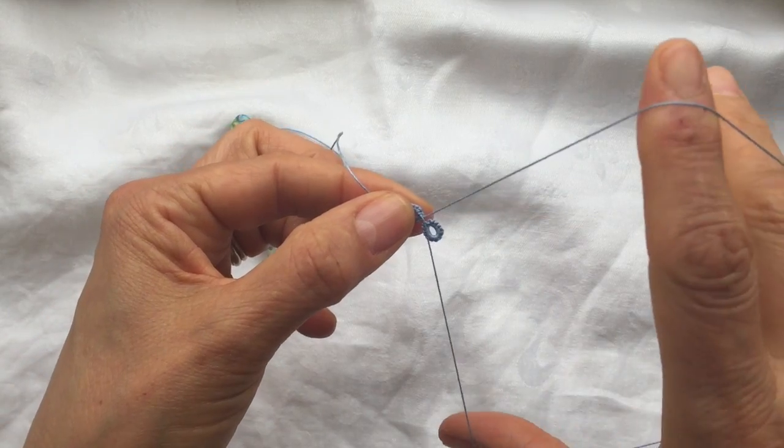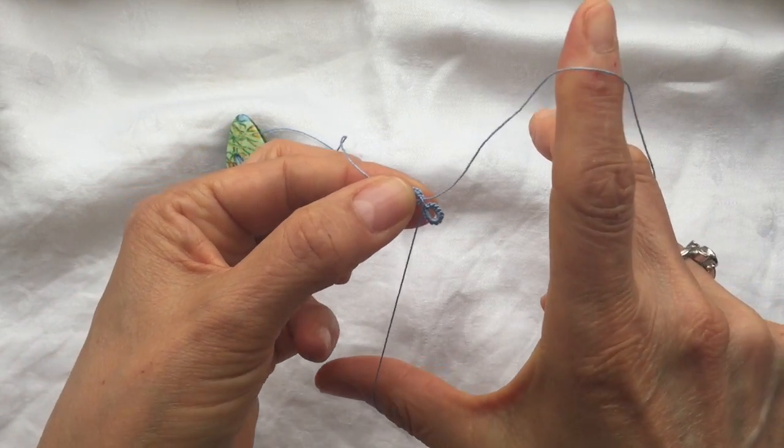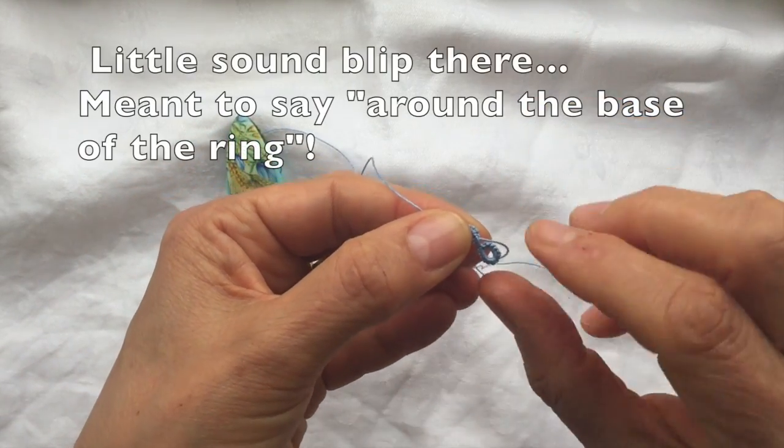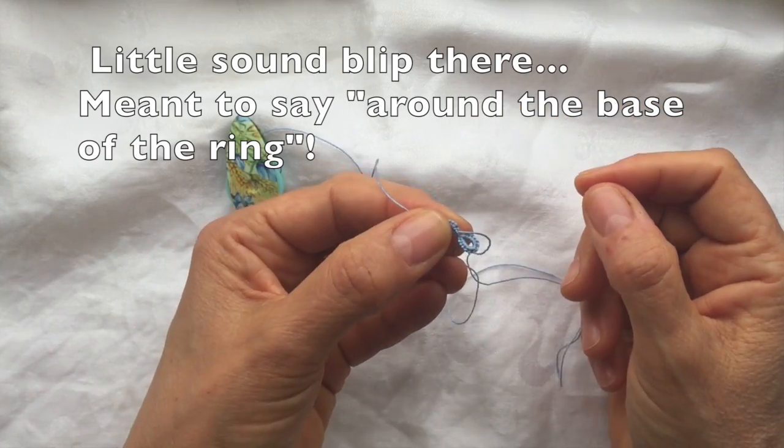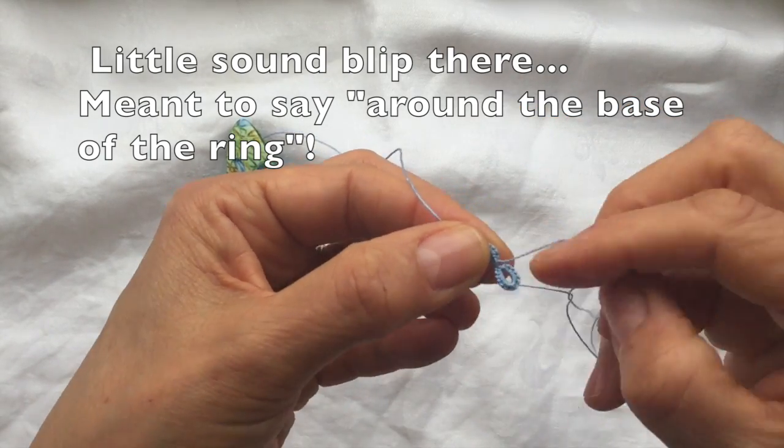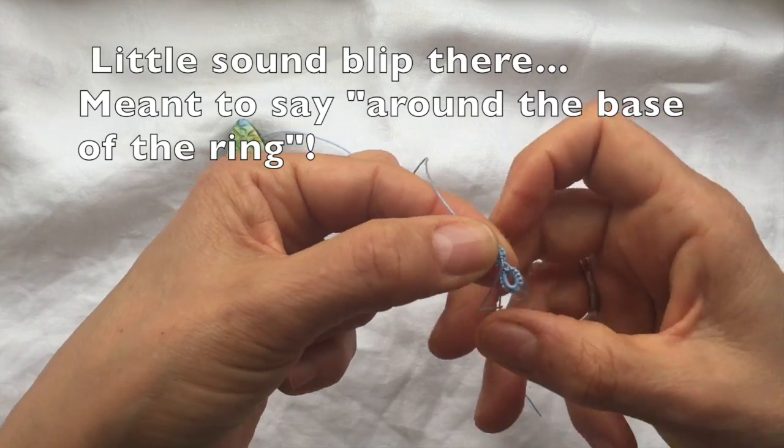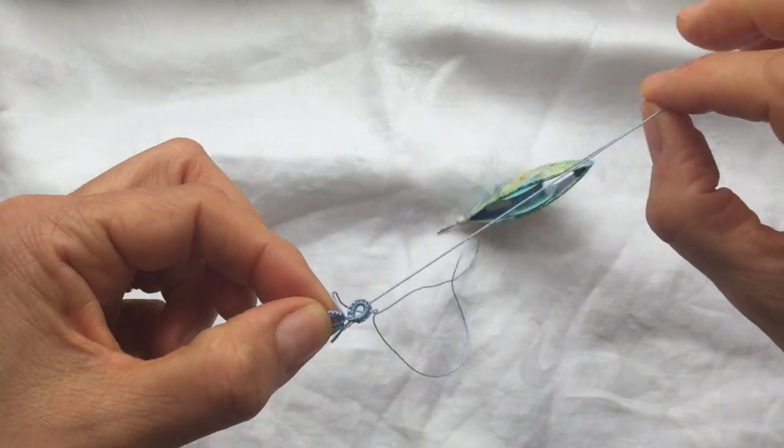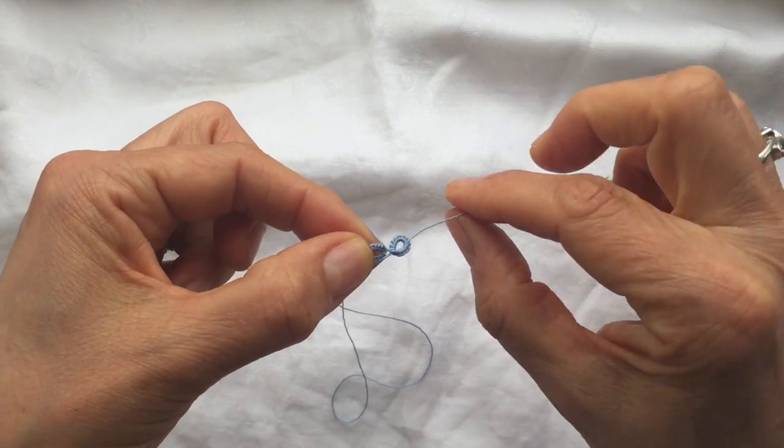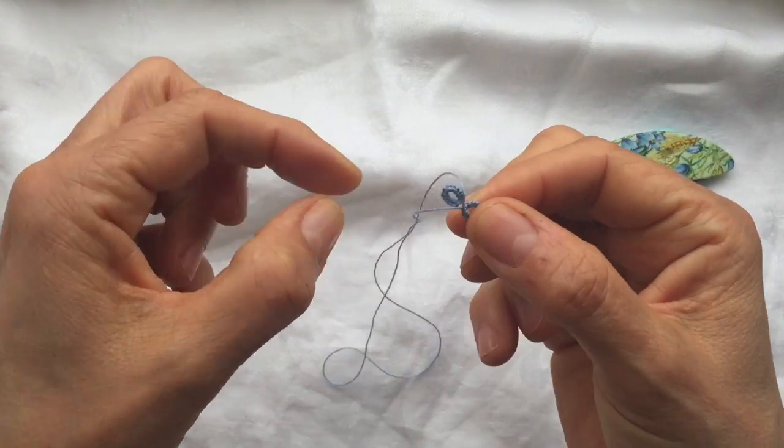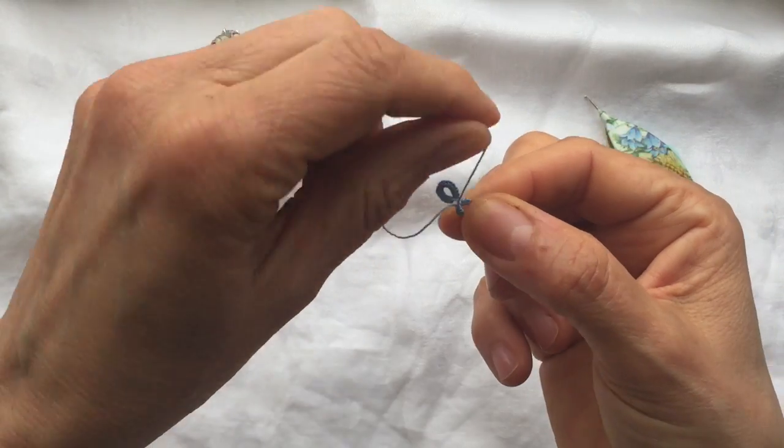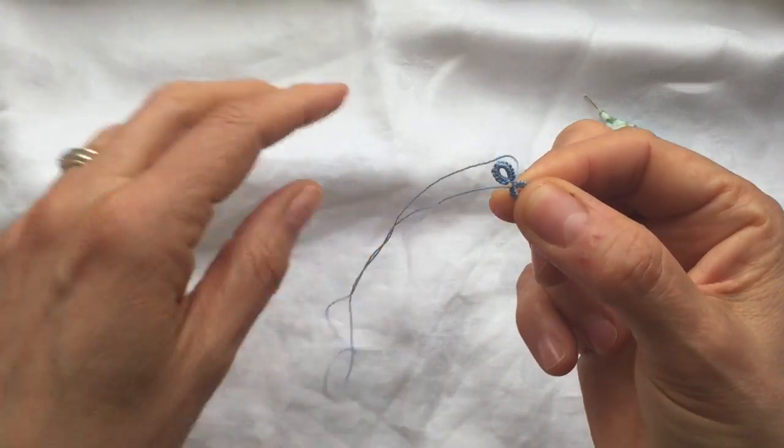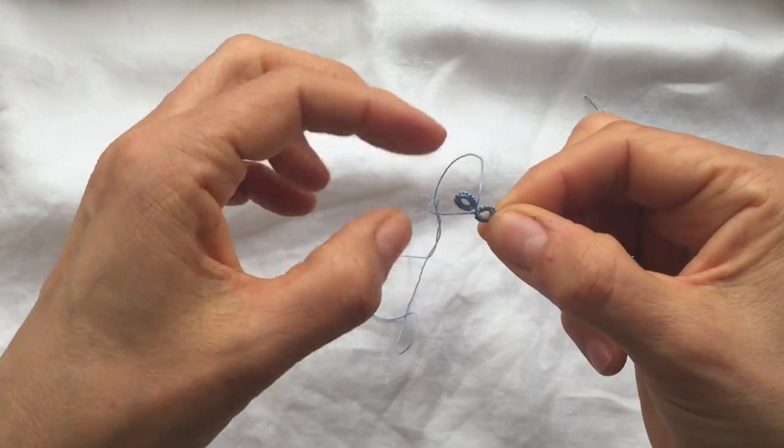And now the next step is you want to make sure that this loop is around the base of the ring, I meant to say. I'm going to turn it the other way around. Because that's what's going to anchor it.